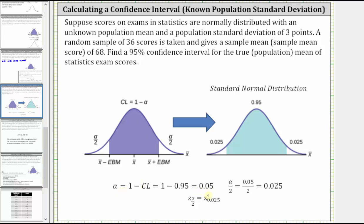So if we take alpha and divide by two, we can find the remaining areas on the left and right outside the confidence interval. And alpha divided by two is equal to 0.025, which gives us the area to the left and right outside the confidence interval.